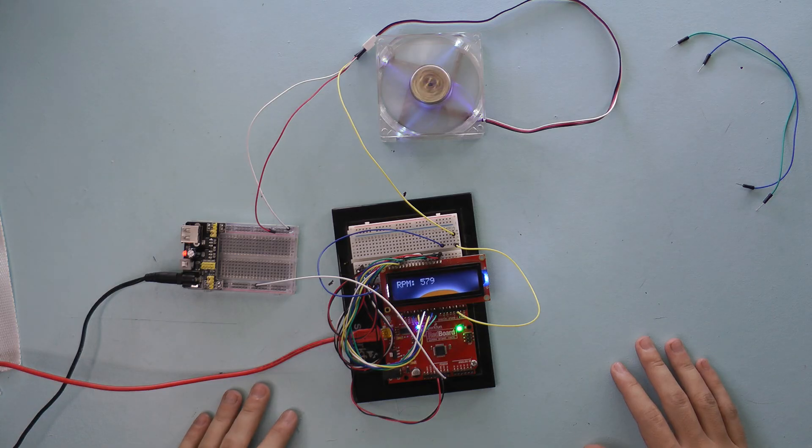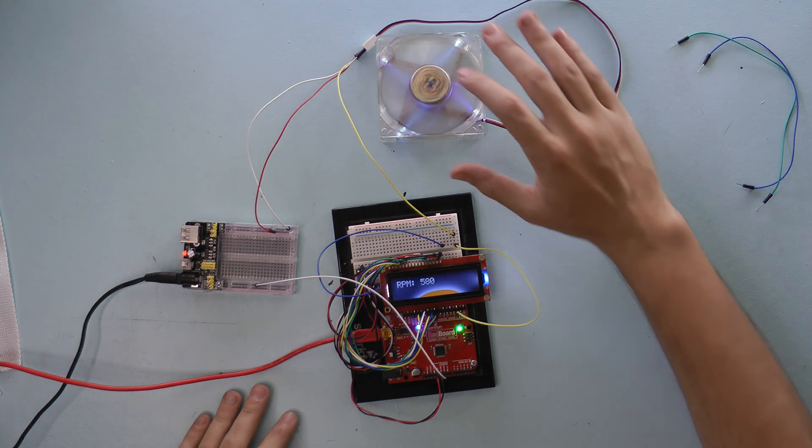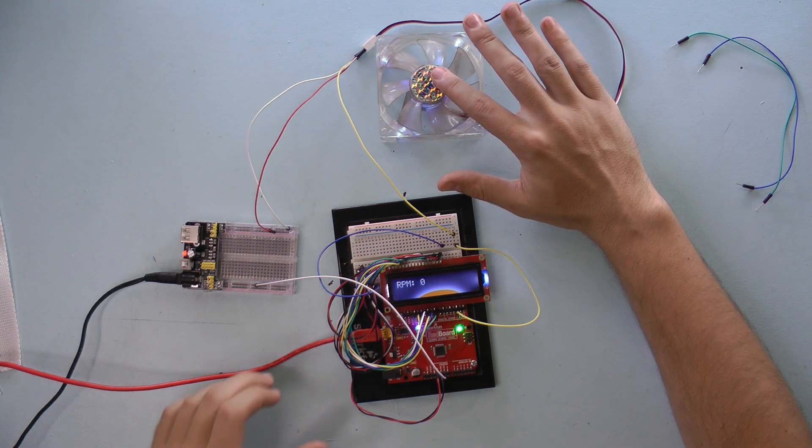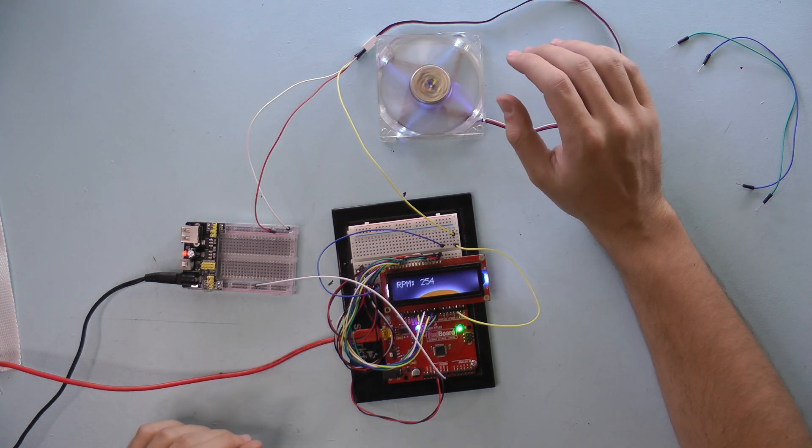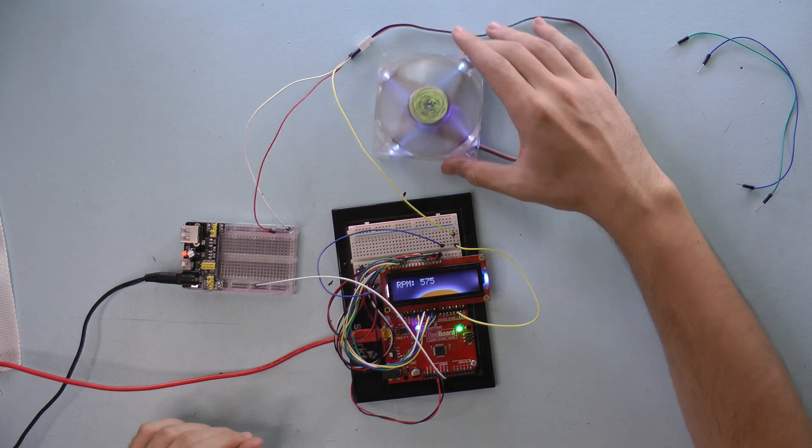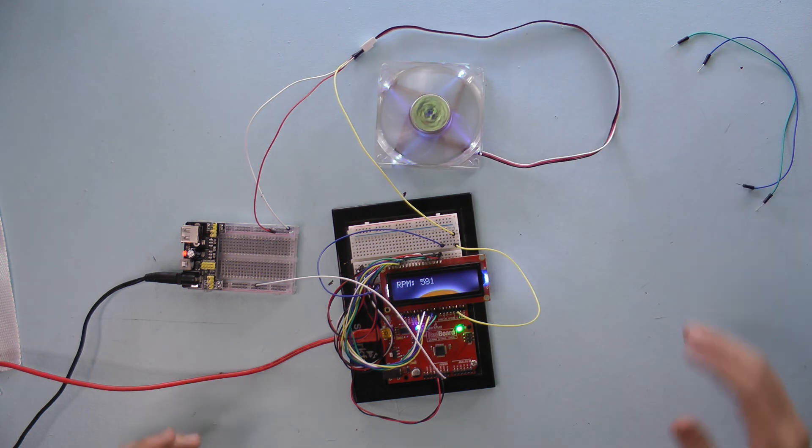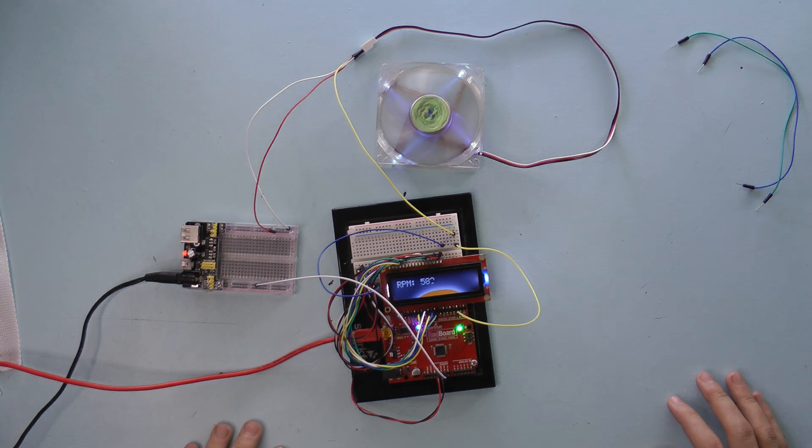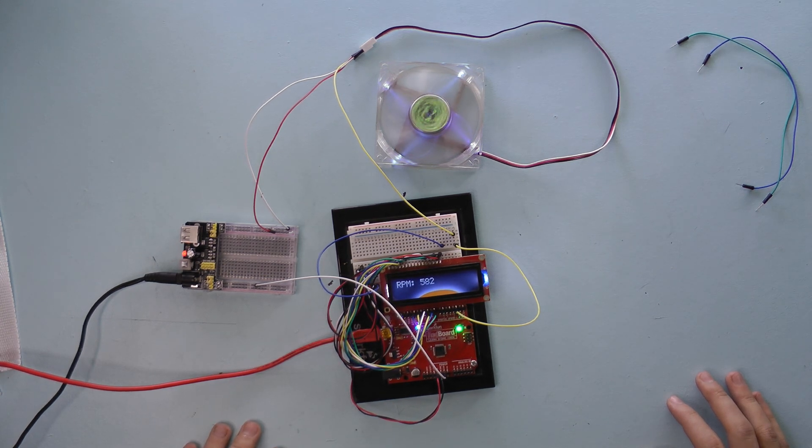And that was how to read the fan speed out of a 3 pin PC fan using an Arduino. My name is Dev Empath and I hope you have a great day further. If you're still here at the end of the video, please feel free to leave a like or a subscribe. I will be making a lot more of these Arduino type tech videos going forward. Thank you so much for watching. Have a great day.